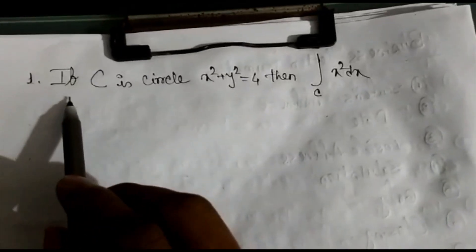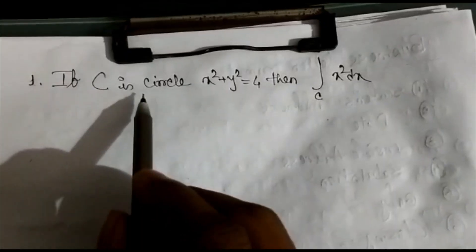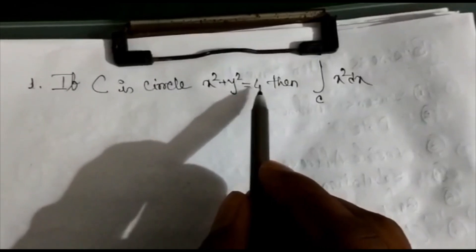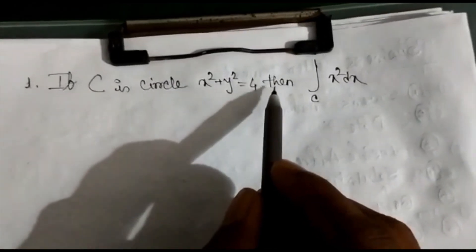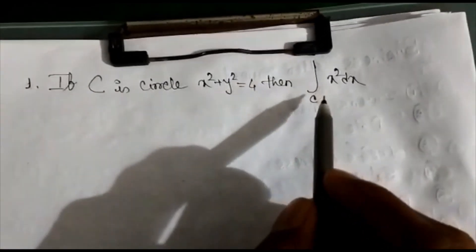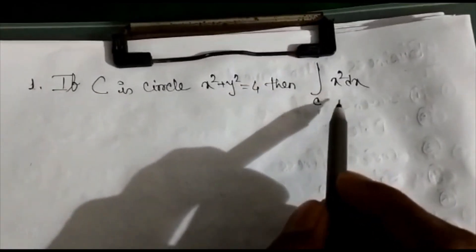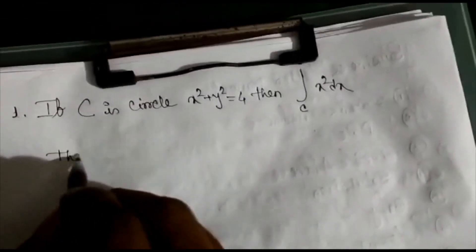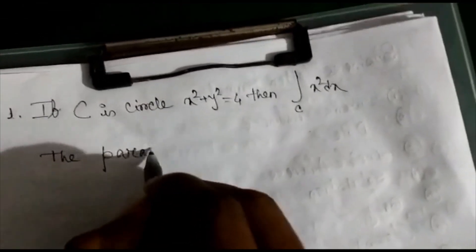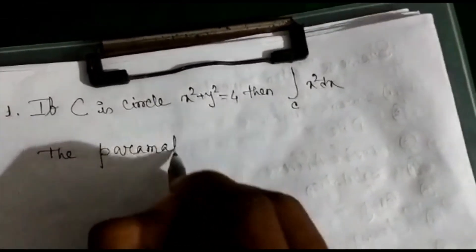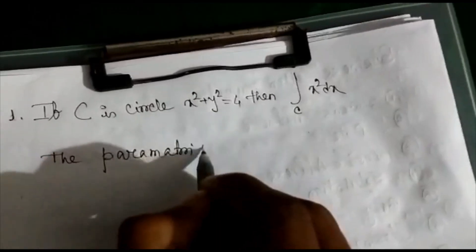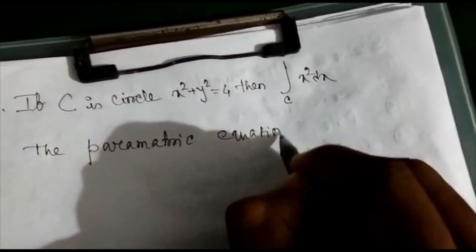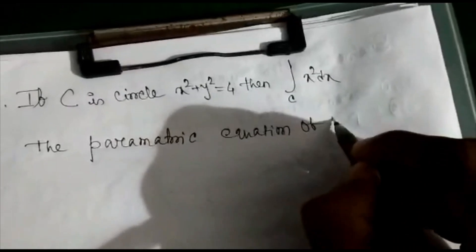The question is: if C is the circle x² + y² = 4, then find the value of the integration of x² dx. We will use the parametric equation approach.